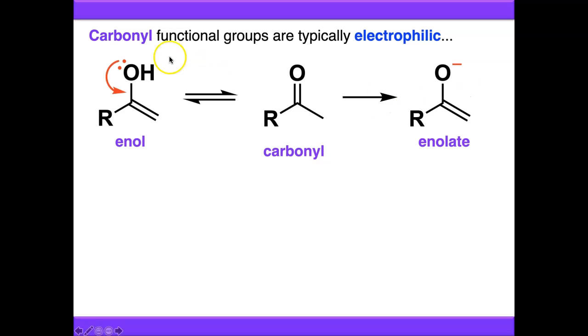If we look at the resonance forms of these compounds, both involve the lone pair on oxygen. If we push the lone pair on oxygen down and then push it through this adjacent pi bond by resonance, then the resonance form of this compound looks like this. This is the enol resonance form. And if we do the same with the enolate, we can end up with an analogous compound here, which again is just lacking a proton.